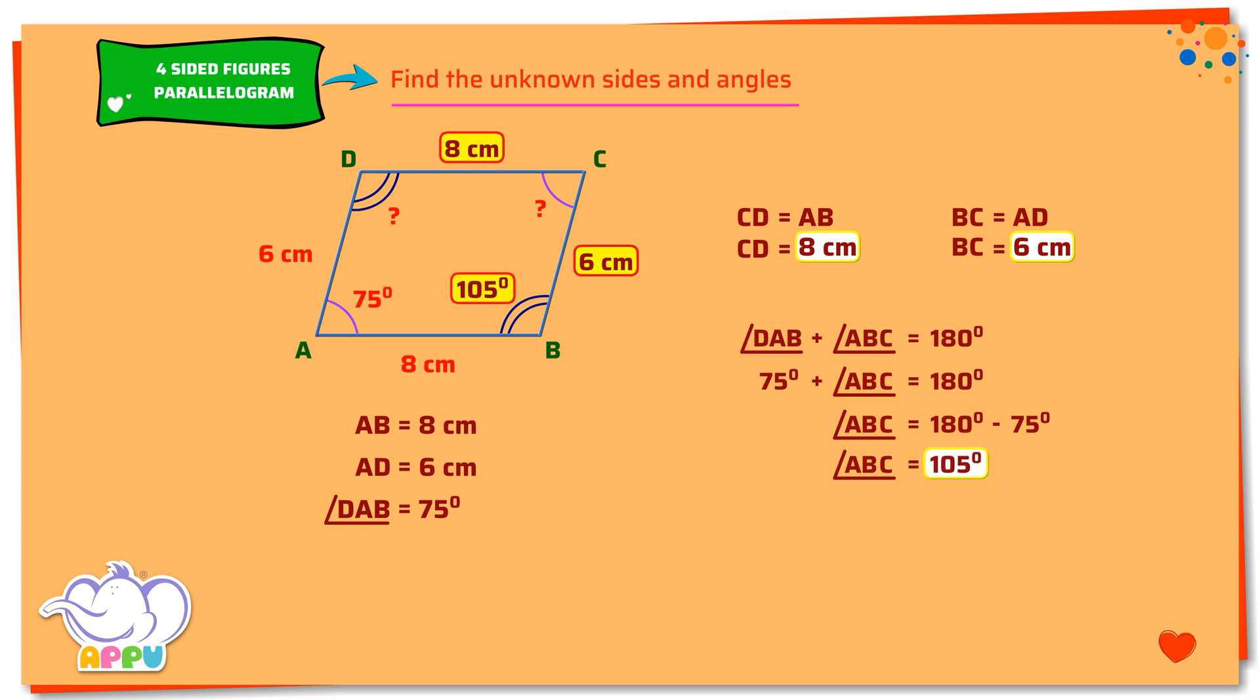Now let's find the remaining angles, angle BCD and angle ADC. We know that a parallelogram has opposite angles equal. Angle BCD equals angle DAB, that is equal to 75 degrees.